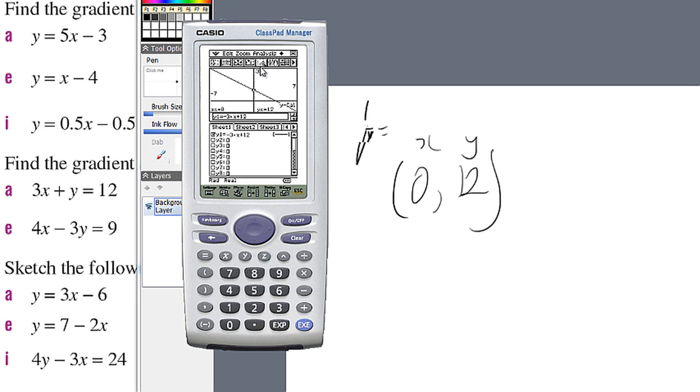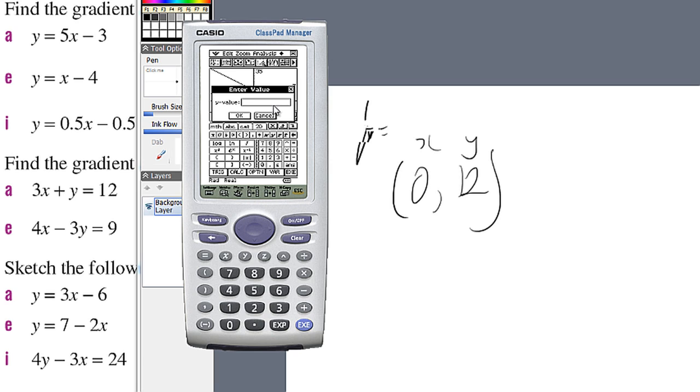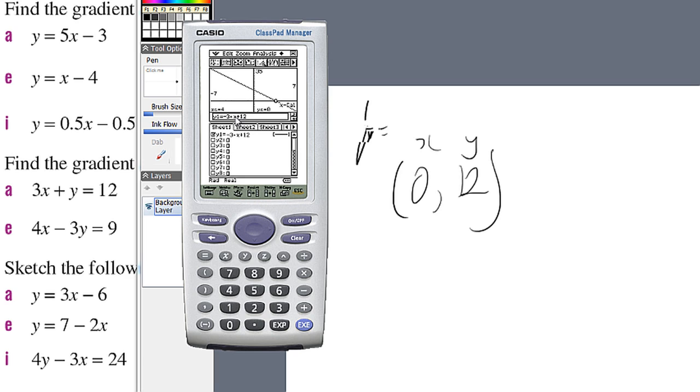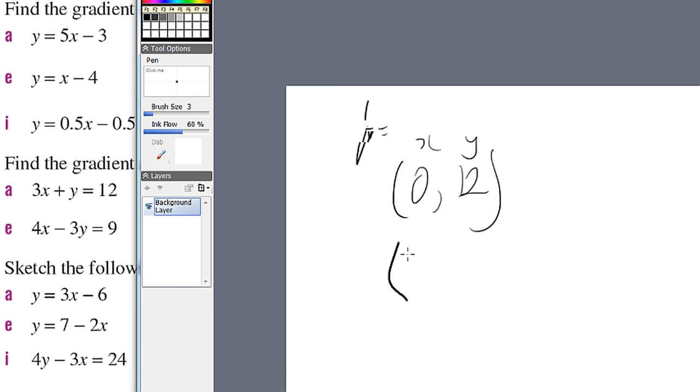Now I can do the same thing. Analysis, g-solve, and x-calc, a y-value of 0, will give us the x-intercept. That happens at x equals 4, y equals 0. So, I'll just write that down on my piece of paper. x equals 4, y equals 0.